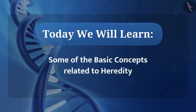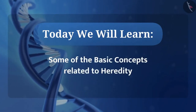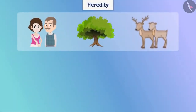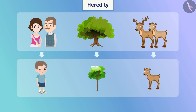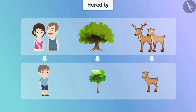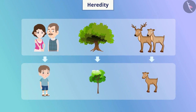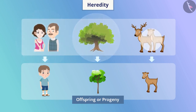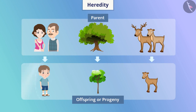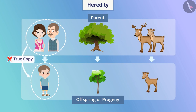Let us discuss some of the basic concepts related to heredity. Each organism generates another organism similar to itself through the process of reproduction. We call the new organism offspring or progeny, and the organism that produces offspring is called a parent. In appearance, the offspring matches its parents, but it is not a true copy of the parent.